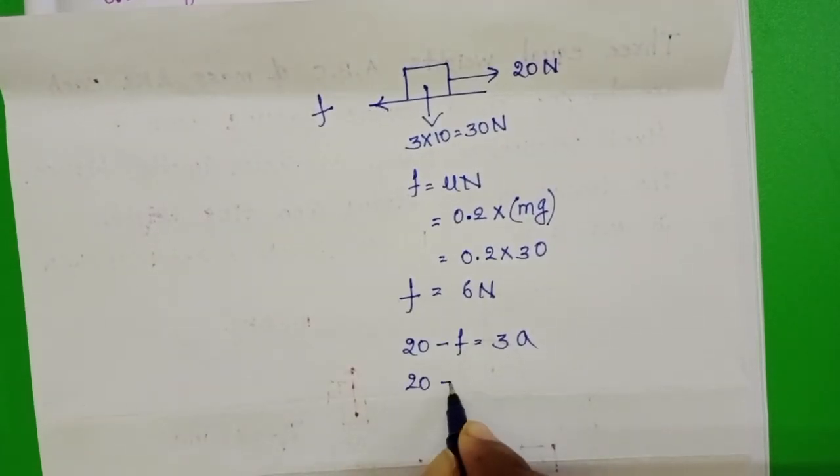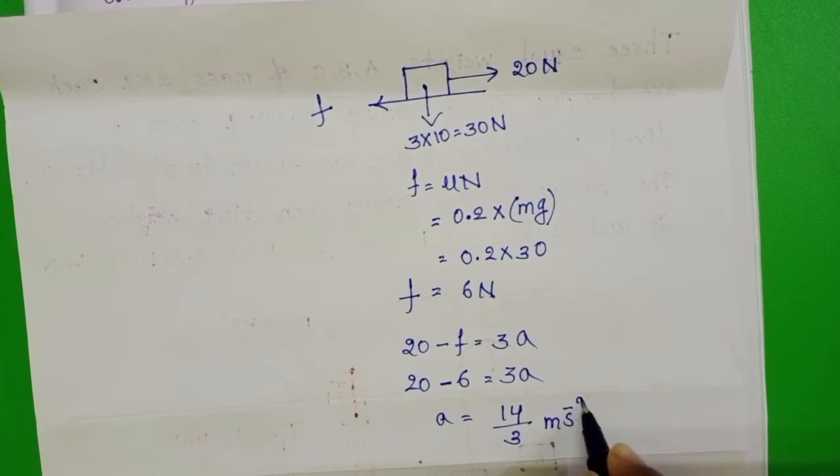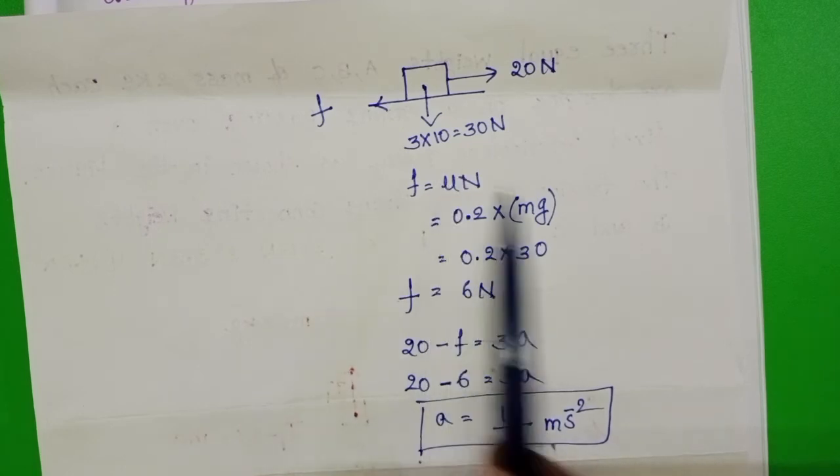20 minus frictional force 6 N equals 3A. From this, A equals 14 by 3 m per second square. This is the acceleration of 3 kg block.